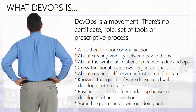The second aspect is about creating visibility between dev and ops — bringing both teams into one room so they can communicate, work, and assign tasks in a single environment. Third is the symbiotic relationship between dev and ops, where developers and operations folks work coherently together. Cross-functional teams over organizational silos is really what brought DevOps into place, along with creating self-service infrastructure for teams.